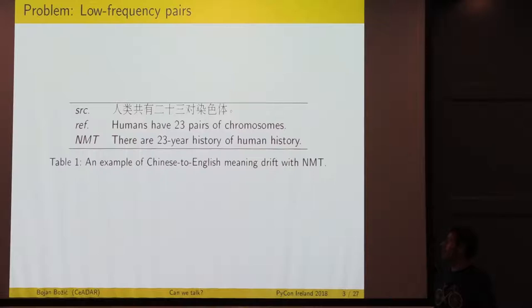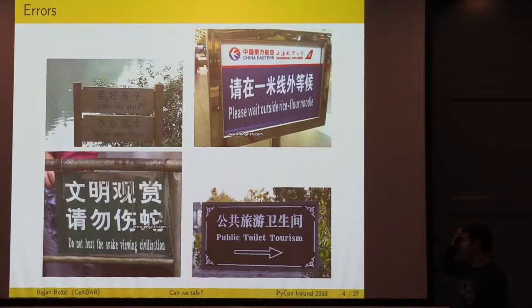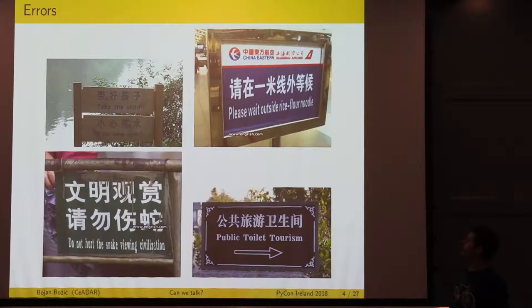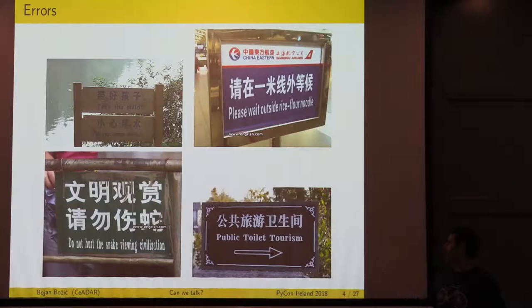This makes no sense in the target sentence. We have completely lost the meaning by smoothing out an infrequent word pair in the chromosomes example. This is called meaning drift in machine translation, the biggest problem of state of the art neural machine translation systems. You could happen to wait outside of rice floor noodles for hours when on a Chinese Eastern flight. You could take your child and fall into the water carefully. The worst of all is public toilet tourism.